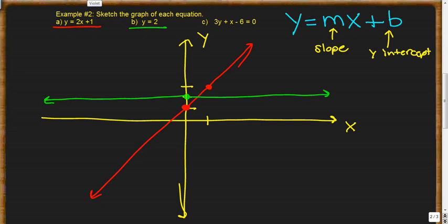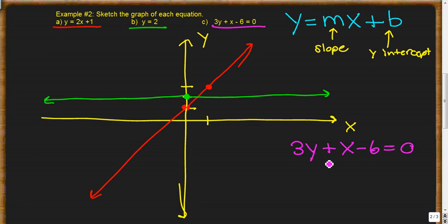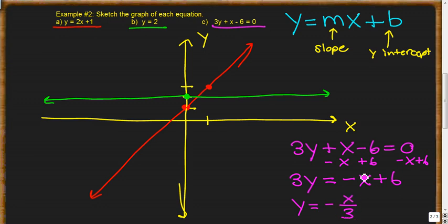The final one is 3y + x - 6 = 0. It's not in the form we need, so we convert it. Starting with 3y + x - 6 = 0, we solve for y by moving x and -6 to the other side, giving 3y = -x + 6. Dividing each side by 3, we get y = -⅓x + 2. Now it's in y = mx + b form and we're ready to graph.